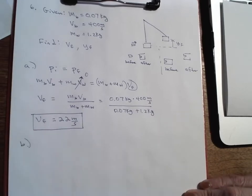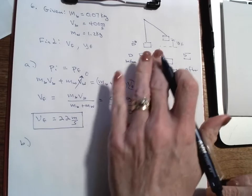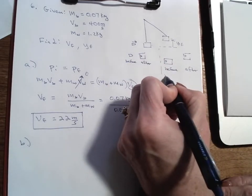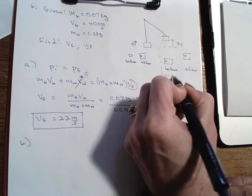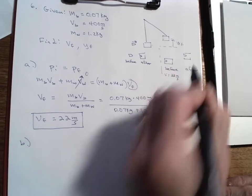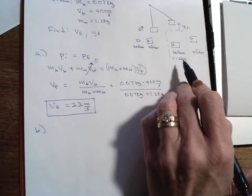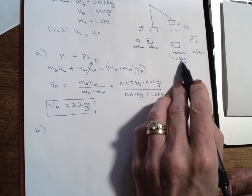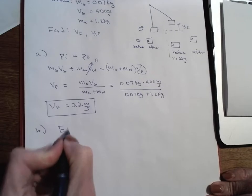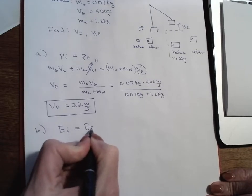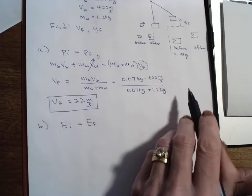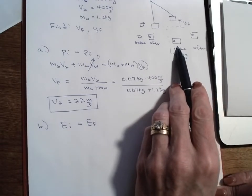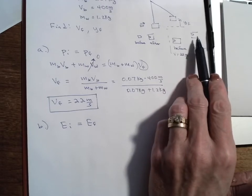Now for part b, we use energy. We know the bullet-block system is moving at 22 meters per second right after the collision — that becomes our new 'before.' We use energy conservation: E-initial equals E-final. At the bottom there's no potential energy, only kinetic energy; at the top there's no kinetic energy and all potential energy.